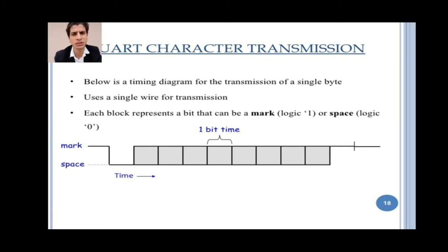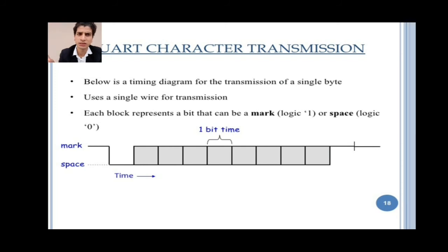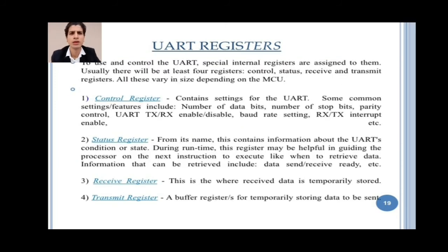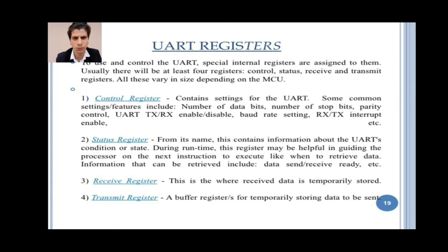UART character transmission: the timing diagram shows the transmission of a single byte using a single line. Each block represents a bit that can be a mark (logic 1) or space (logic 0). UART registers: to use and control the UART, special internal registers are assigned. There will be at least 4 registers: control, status, receive, and transmit registers. These vary in size depending on the MCU.